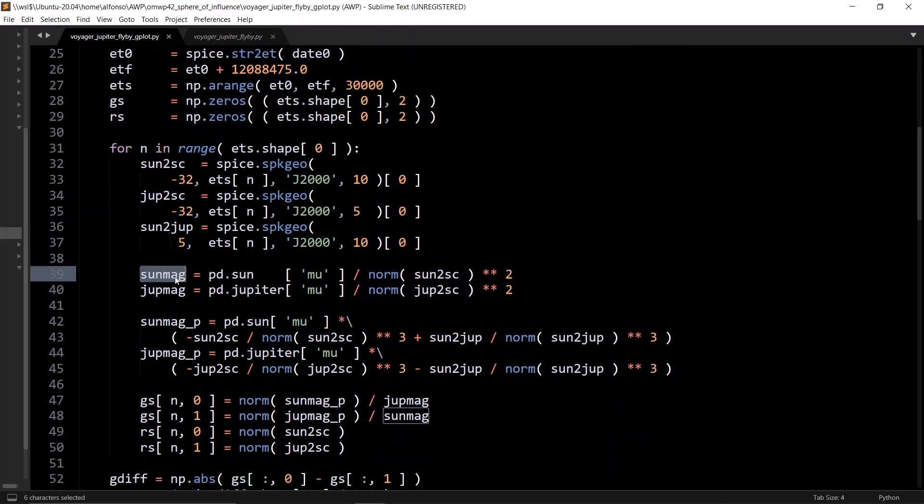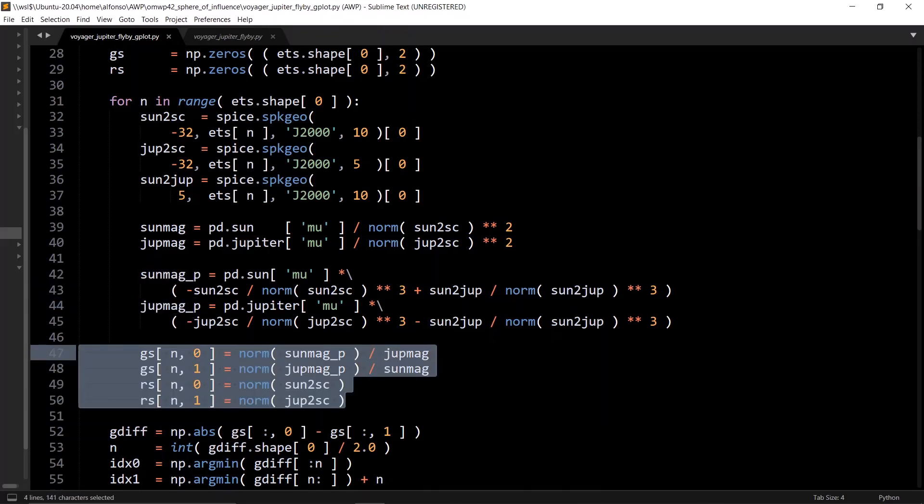We get the Sun mag, which is just the magnitude of the acceleration of the Sun when it is modeled as a central body, which is just this simple equation. Same thing for Jupiter, the magnitude of Jupiter's acceleration when it is modeled as a central body. Then we have the magnitude of the Sun when it is modeled as a perturbation, same thing for Jupiter when it's modeled as a perturbation. Then plug in all those values into the arrays.